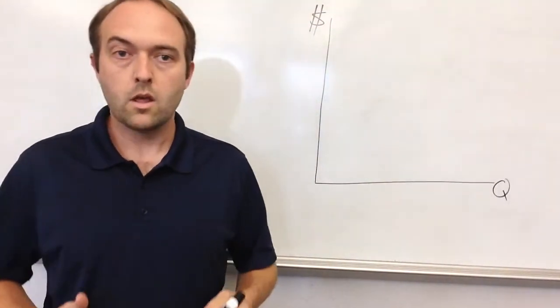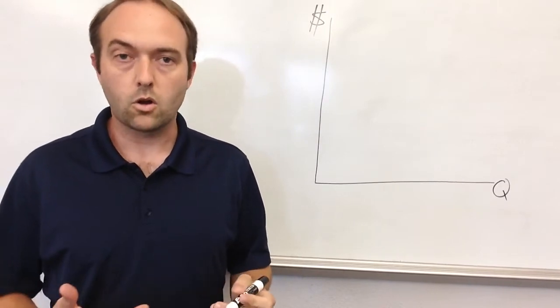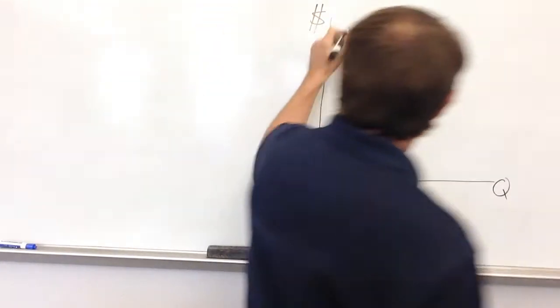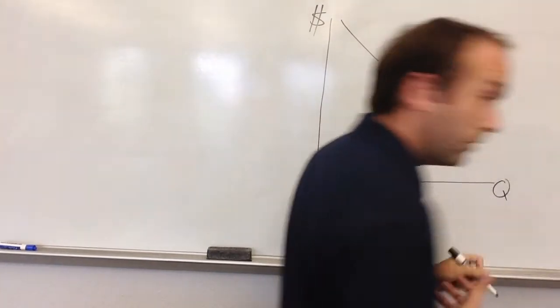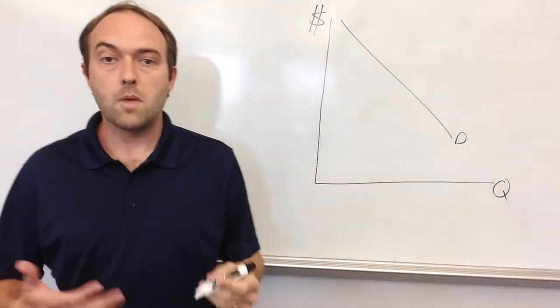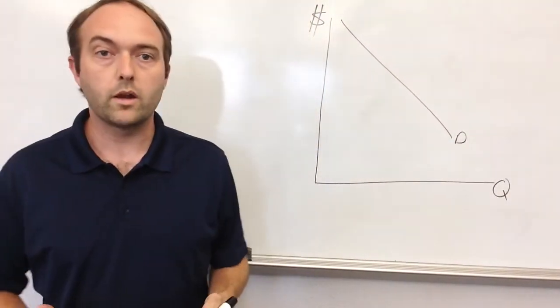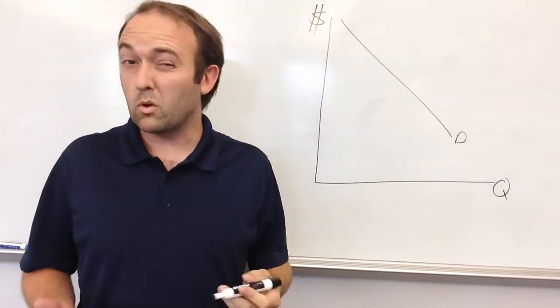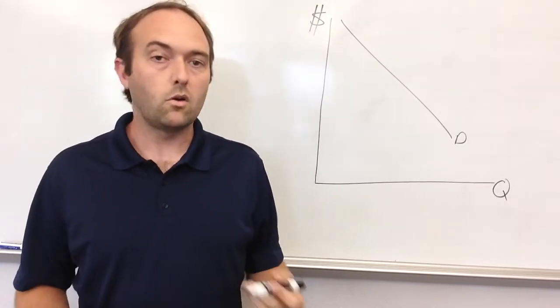For demand, we're going to make our demand curve or function downward sloping. It's going to look something like this. Demand is downward sloping because if a product increased in price, people are going to want to buy less of it. That's our law of demand.